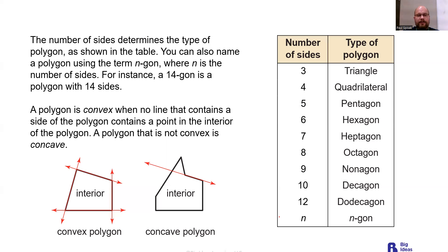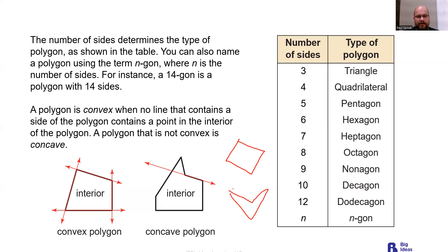There are two types of polygons: convex and concave. A polygon is convex when no line containing a side also contains a point in the interior of the polygon. A polygon that is not convex is concave. Think of it this way: for a convex polygon all angles point outwards, whereas for a concave polygon one of the angles points inward — it's caved in.